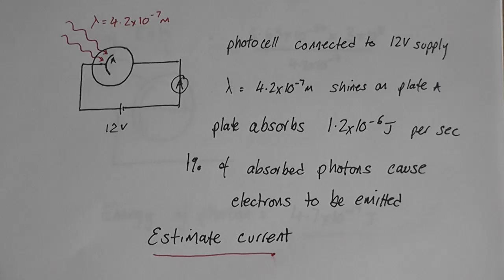The plate absorbs 1.2 times 10 to the minus 6 joules of light energy every second. One percent of absorbed photons cause electrons to be emitted from the plate. You have to estimate the current in the circuit.